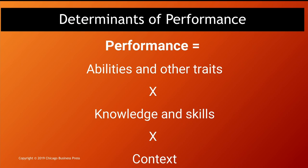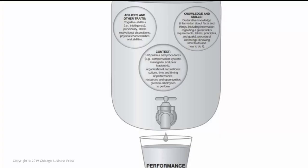Abilities and other traits include mainly cognitive abilities, personality, stable motivational dispositions, and physical characteristics and abilities — depending on the type of work, the work environment, and the industry.